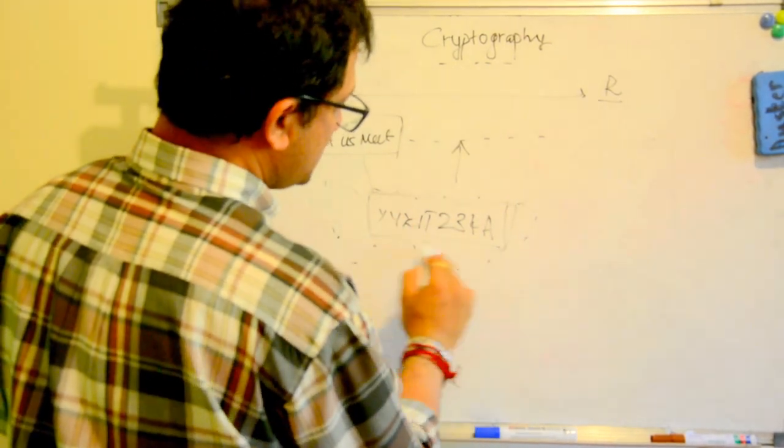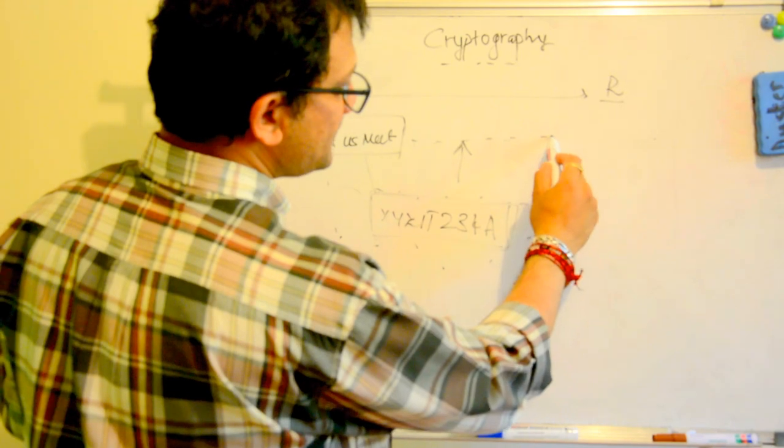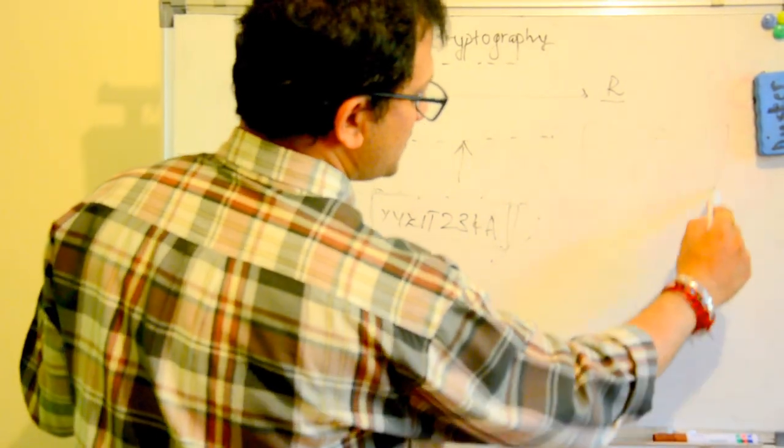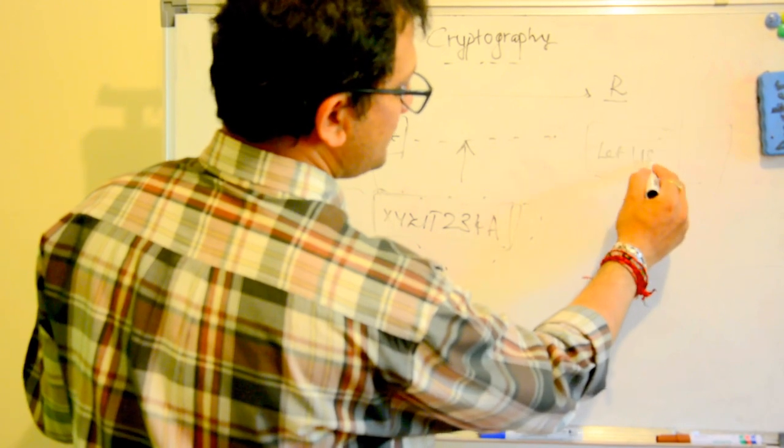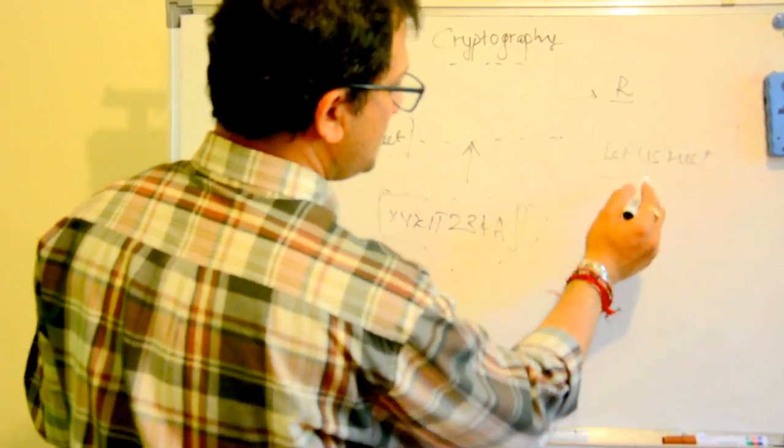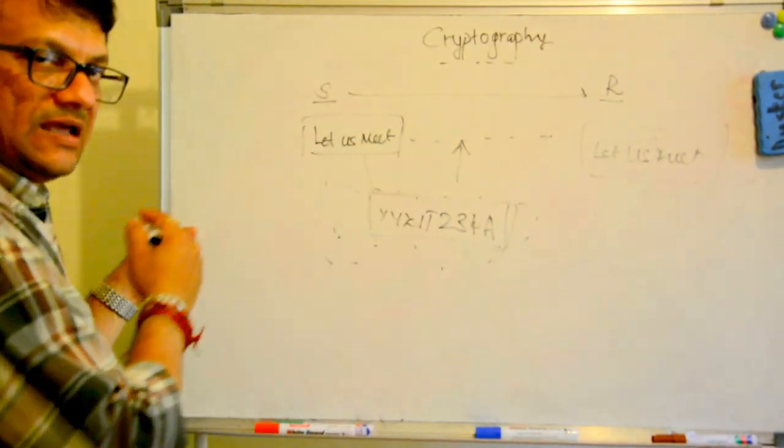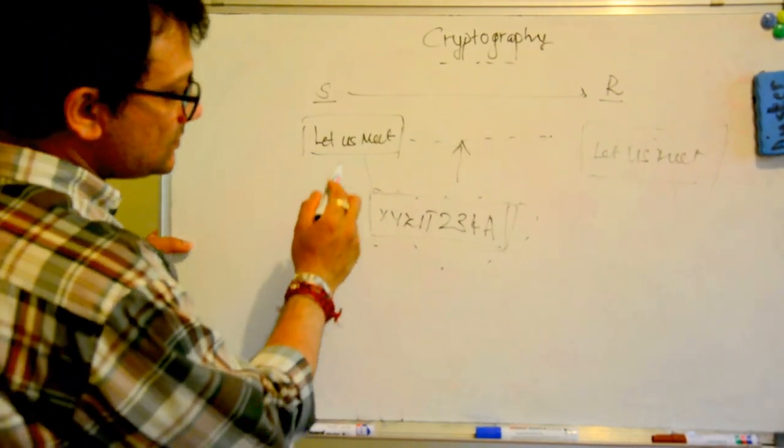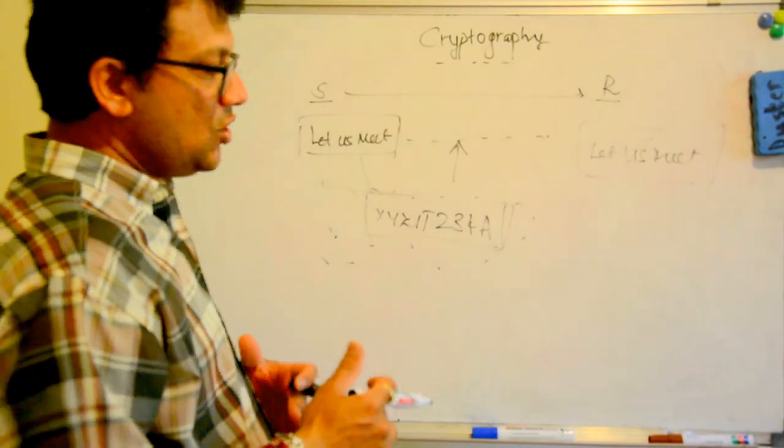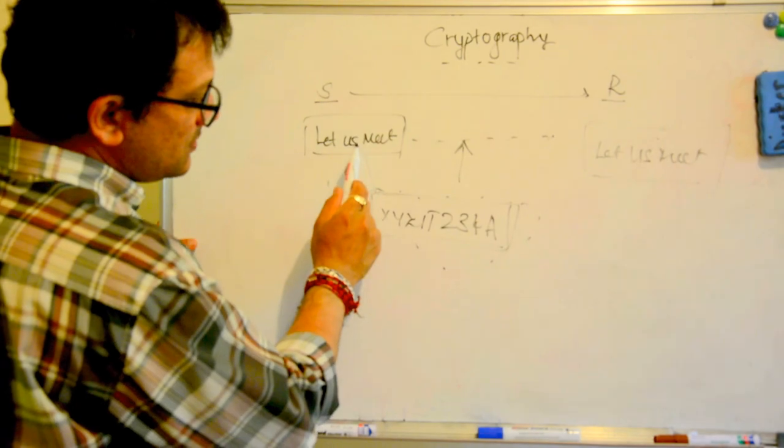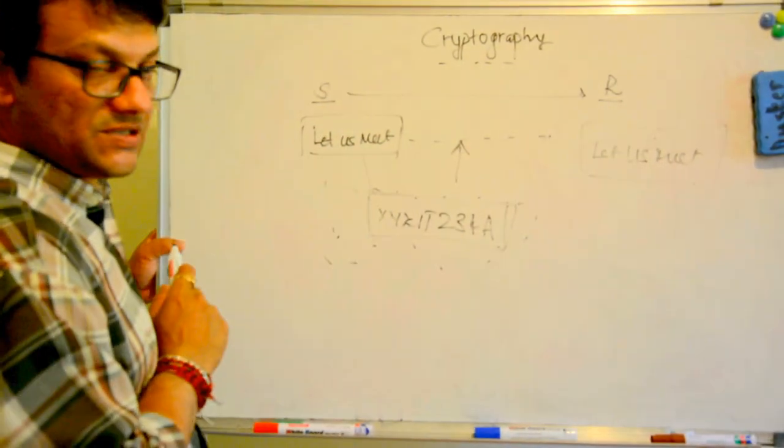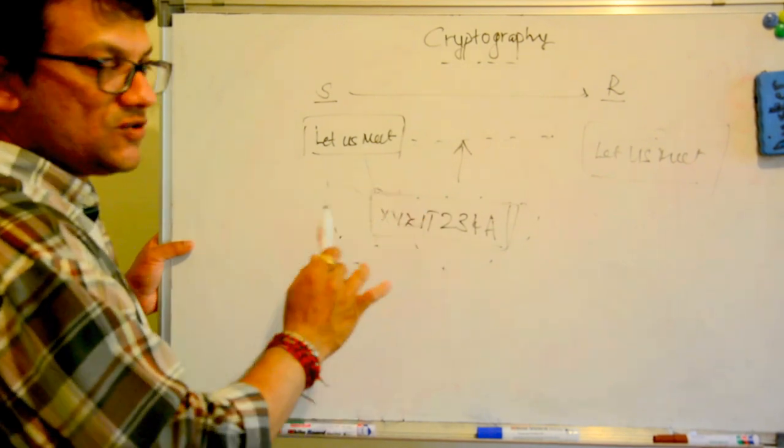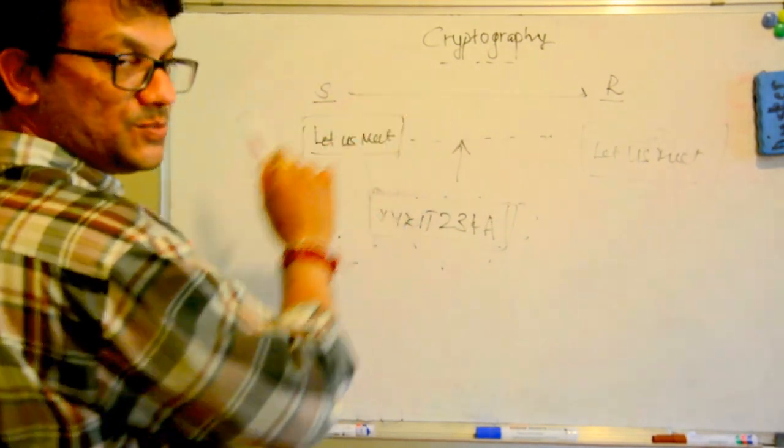Which remains in this state during the travel. And when it reaches the receiver, it is again changed into the normal, the original language. This is a simplistic way: original message, changed message, again back to the original message. This is the simplest way of explaining cryptography.